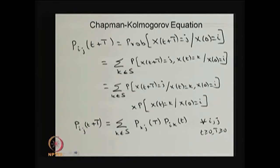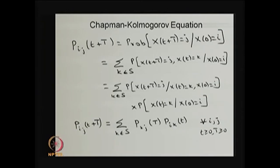Now I am going to find p_ij(t). I will do the derivation starting with the Chapman-Kolmogorov equation. The transition probability of the system moving from state i to state j during time 0 to t plus capital T is the probability that the system is in state j at time t plus T given it was in state i at time 0. I can insert an intermediate state k at time point t for all possible values of k and obtain the same result.